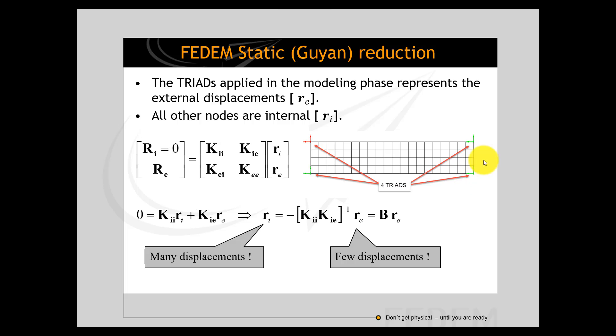When all triads or supernodes are identified for a link in FEDEM, you can do the model reduction or actually the FEDEM software is doing it for you. What happens then is that all internal forces are assumed to be zero and you perform or FEDEM performs a traditional static model reduction.